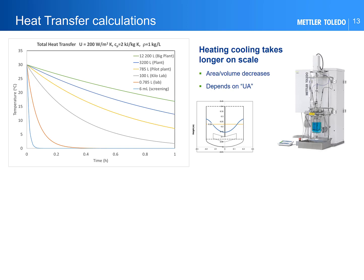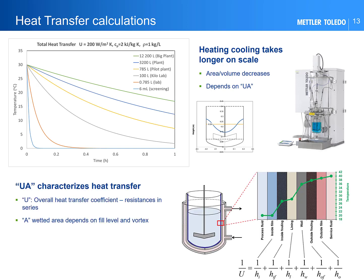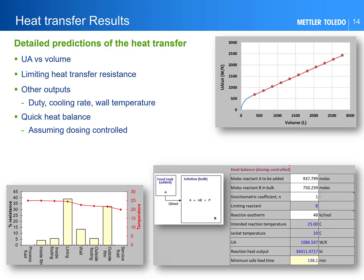The toolbox allows a calculation of the UA, which comprises the wetted area from the geometry and amount of liquid, plus the vortex which can create some extra area, and the U value which can be estimated from engineering correlations. This U value is a series of resistances through the vessel wall and the fluid films either side of the vessel wall. The calculation allows you to see which heat transfer resistance is limiting — for example, it could be inside the vessel wall or on the jacket side — and this will allow you to see if increasing the agitator speed will improve heat transfer. You can also see the UA versus volume, and get other outputs like wall temperature, cooling and heating rate, etc.